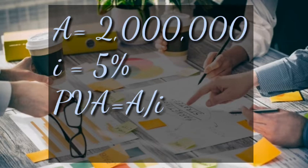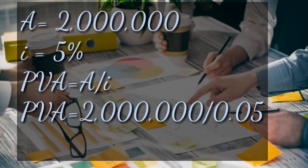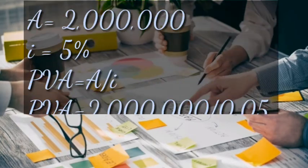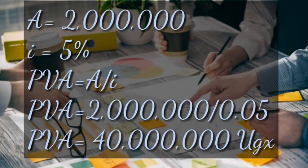From our question, A is 2 million and our interest rate is 5%. We shall use the formula: Present Value of Perpetual Annuity = A divided by I. Substituting, we get 2 million divided by 0.05, where 0.05 represents the 5% interest rate.